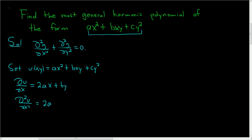Now let's take the partials with respect to y. So del u del y, this is equal to, in this case, the first term is 0. So we just end up with bx plus 2cy.